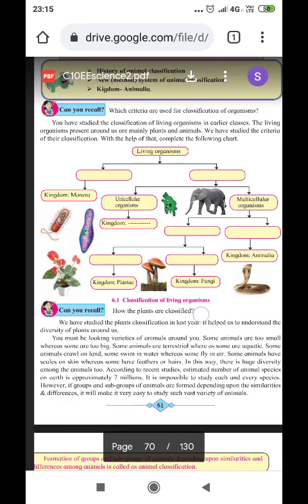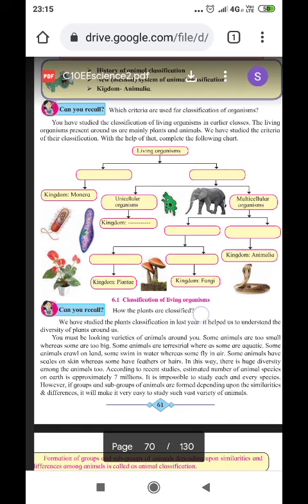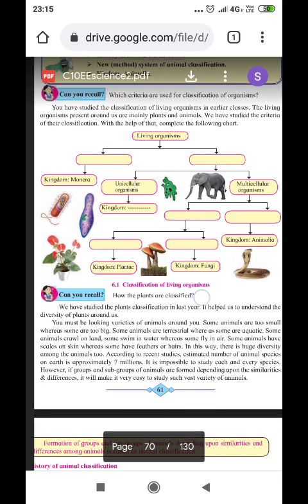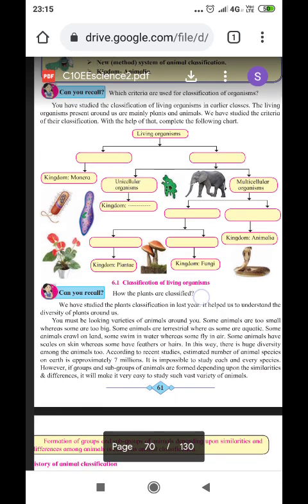Try to complete it. Now, living organisms are classified into prokaryotes and eukaryotes, that we already discussed in the eighth standard. Further, prokaryotes are divided into or classified into kingdom monera, then unicellular organisms are classified into kingdom protista.